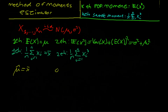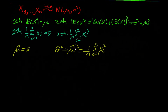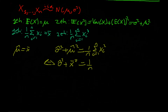Now we set the second population moment equal to the second sample moment. This gives us sigma squared plus mu squared equals 1 divided by n times the summation from i equals 1 to n of x_i squared. We already have an expression for mu-hat, so let's substitute it in. This gives us sigma-hat squared plus x-bar squared equals 1 divided by n times the summation.